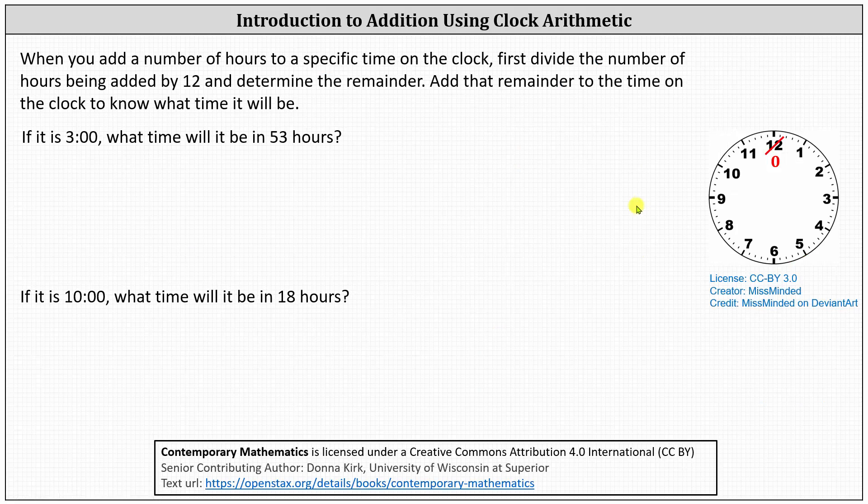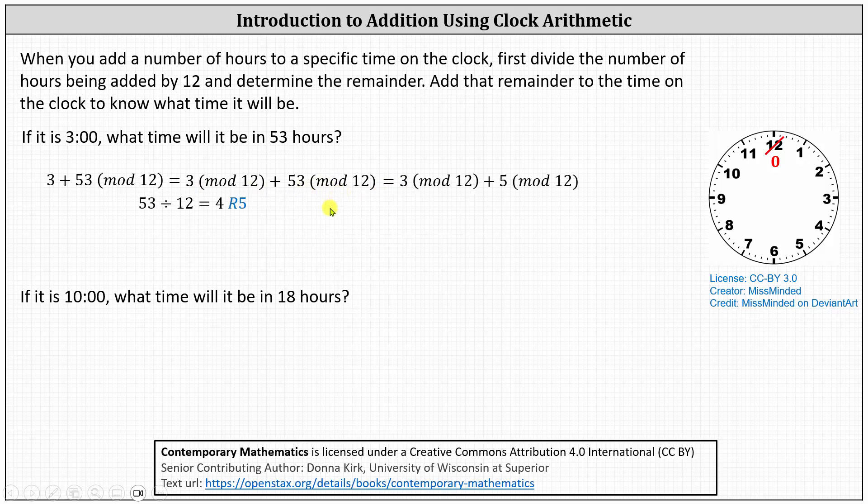Before we go, let's look at two examples involving time. First, if it is 3 o'clock, what time will it be in 53 hours? We can write this as 3 plus 53 mod 12. And again, we have two methods to evaluate this. Let's first write this as 3 mod 12 plus 53 mod 12. And of course, 3 mod 12 is equal to 3.